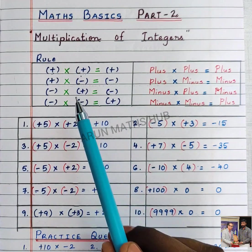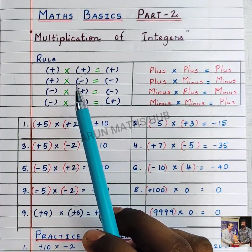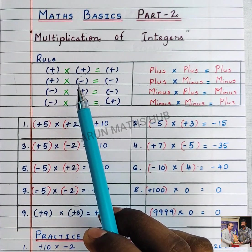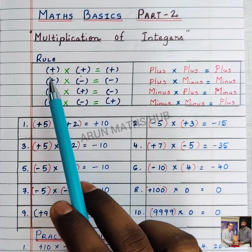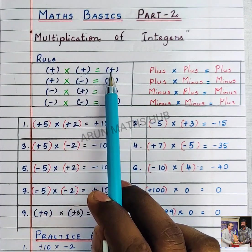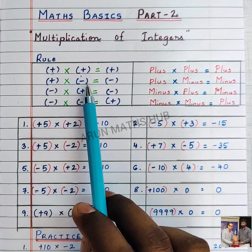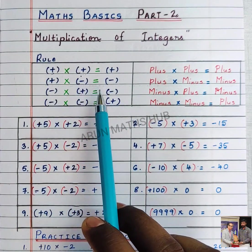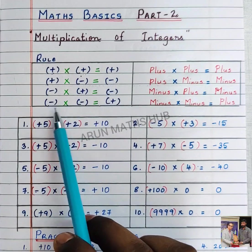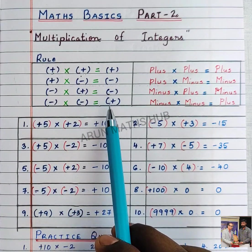So, to revise the basic rule for multiplication of integers: plus into plus is plus, plus into minus is minus, minus into plus is minus, minus into minus is plus.